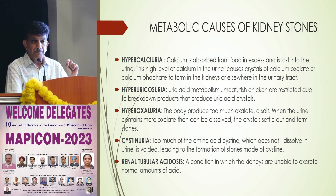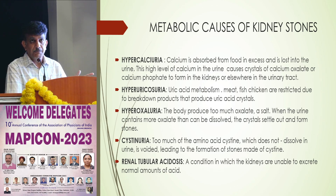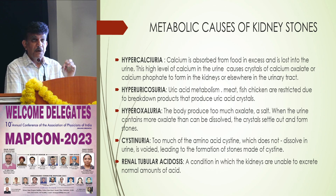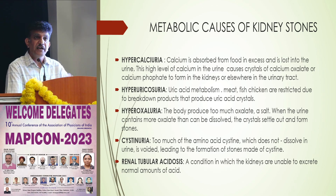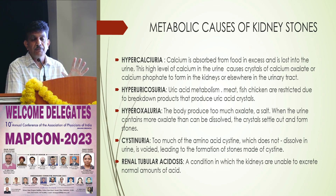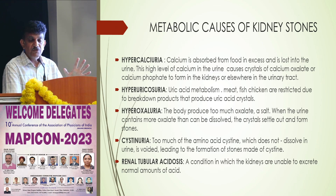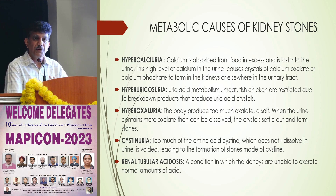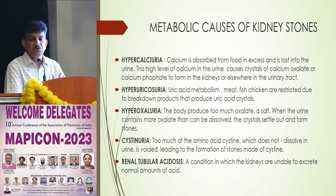The basic etiology of stone formation includes hypercalciuria, hypericosuria, hyperoxaluria, cystinuria, and in rare cases especially in pediatric patients, renal tubular acidosis. When patients insist on biochemical analysis of the stone, thinking they can avoid that substance in their food, the answer is a strict no. In my 15 years of practice as a urologist, I have never ordered a biochemical analysis of the stone. I would rather go for 24-hour urinary citrate and uric acid investigations after the stone is removed and the patient has a normal lifestyle.